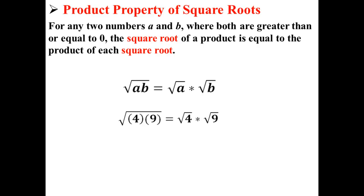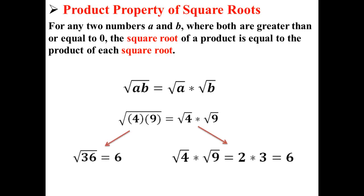Now, let's check that. First, the square root of 36 is equal to 6. Now, we try the square root of 4 times the square root of 9, which is 2 times 3, which is also 6. So we can see that the product property of square roots works.